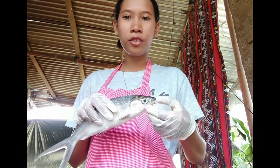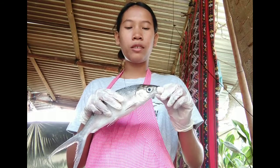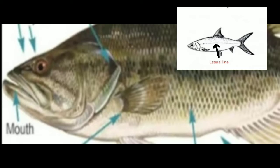The nares or nostrils are used to detect odors in the water. This is the mouth of the fish, and it is used to eat. Also, the fish mouth's shape is a good clue to what fish eat — the larger it is, the bigger the prey it can consume.